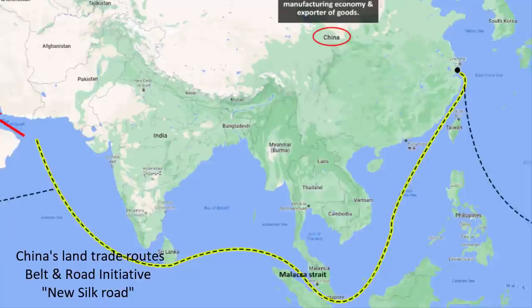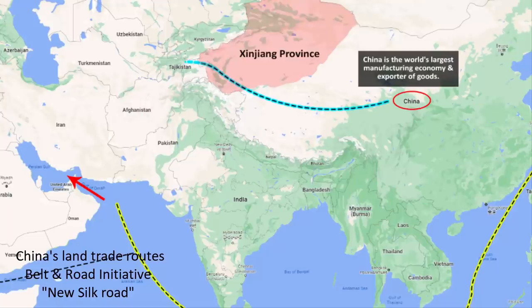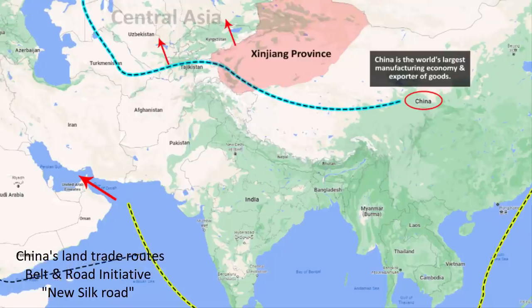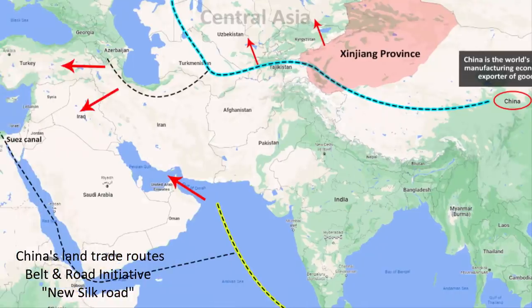Now the land trade route is also known as China's Belt and Road Initiative, or the New Silk Road. The road passes through the Xinjiang province in China and then enters into the Central Asian countries. Then through Iran and Kazakhstan, it can access Middle Eastern and European markets. That means Xinjiang is China's bridge to Central Asian, Middle Eastern and European markets.